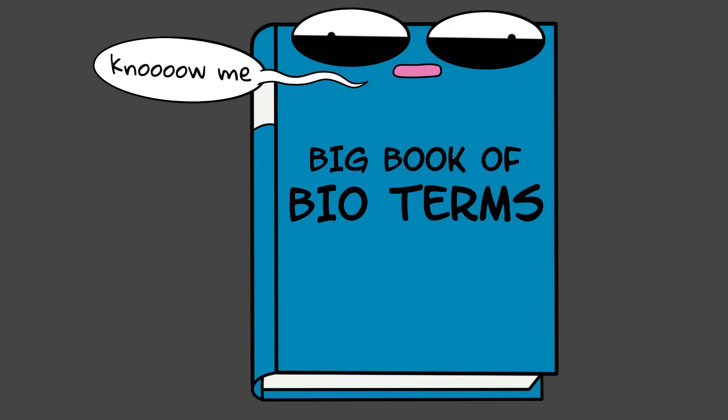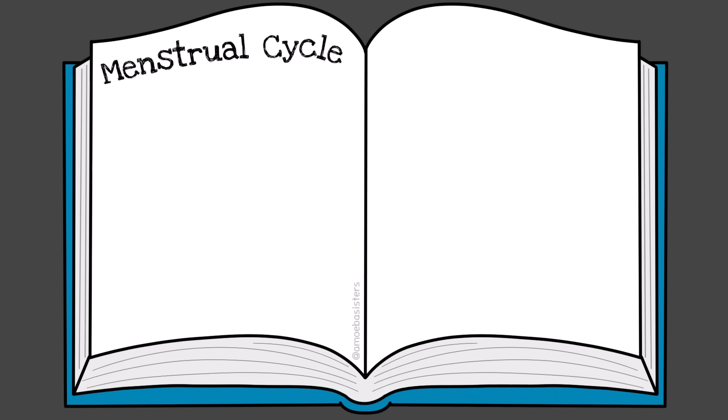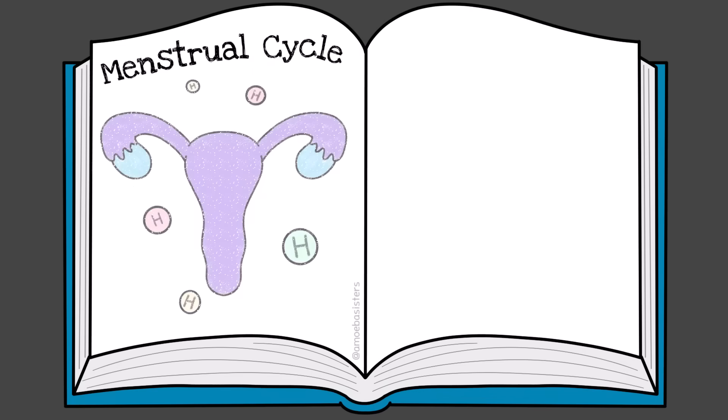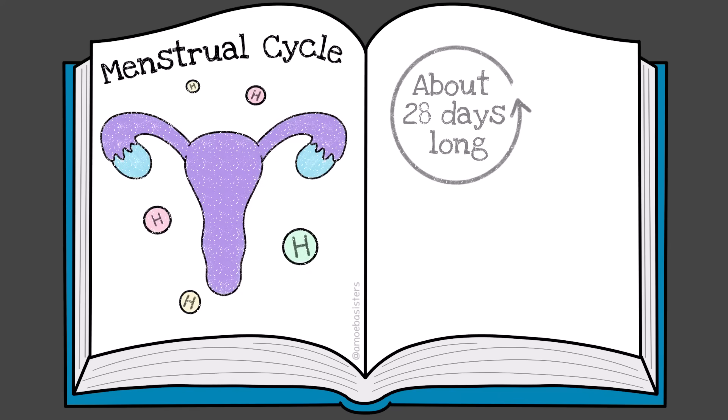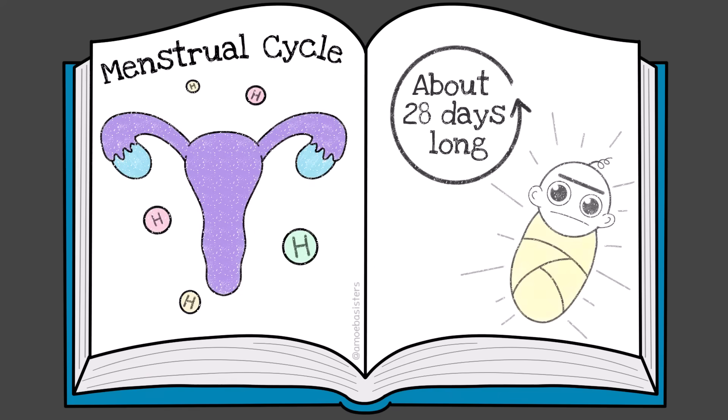Before we start, let's intro some terms. The menstrual cycle is a cycle of changes that involve reproductive hormones and female reproductive structures. It has an average length of 28 days, but that can vary. Ultimately, the changes that occur in this cycle prepare the female reproductive system for potential pregnancy.